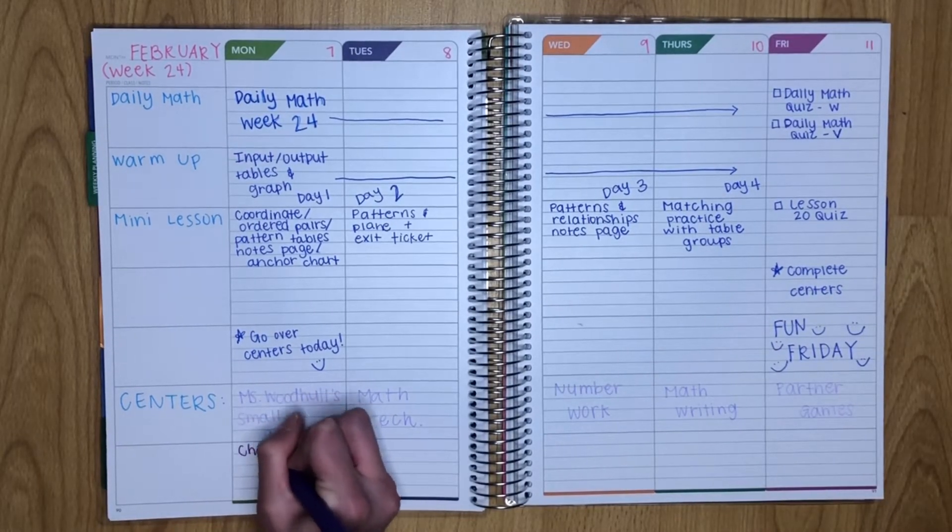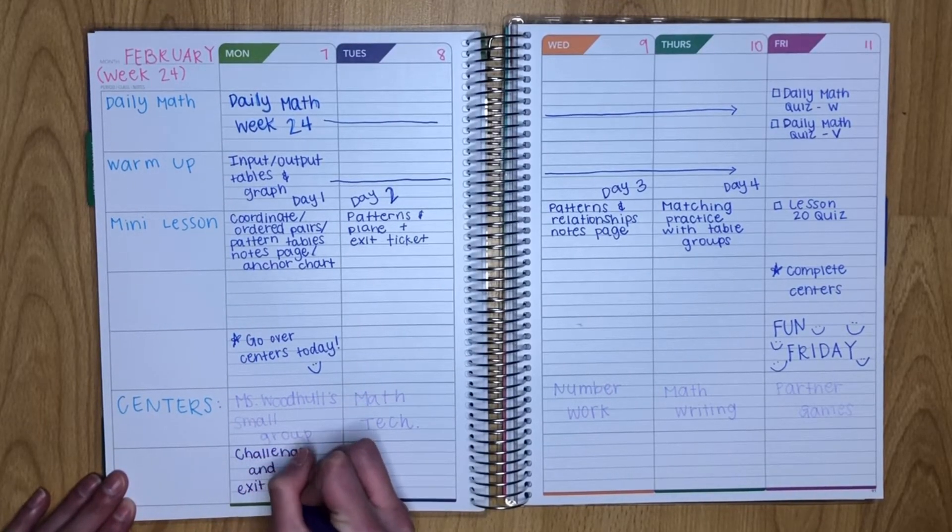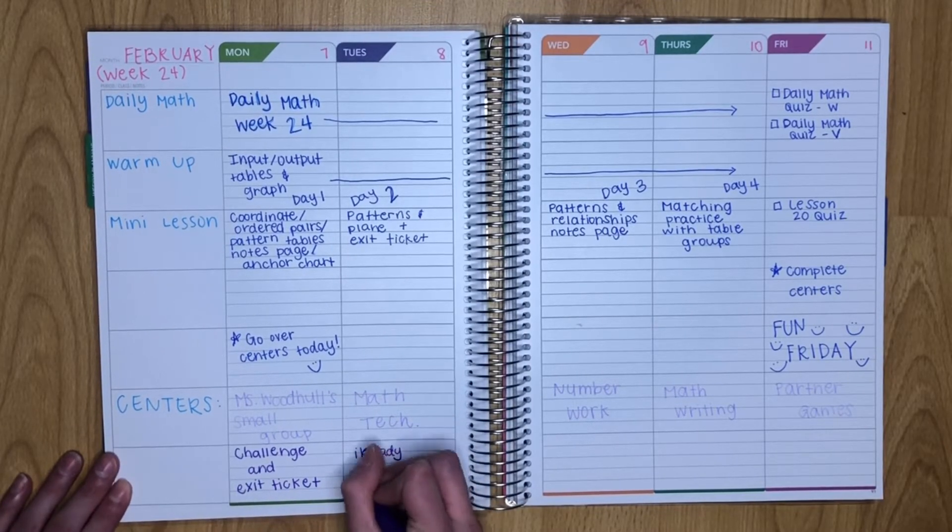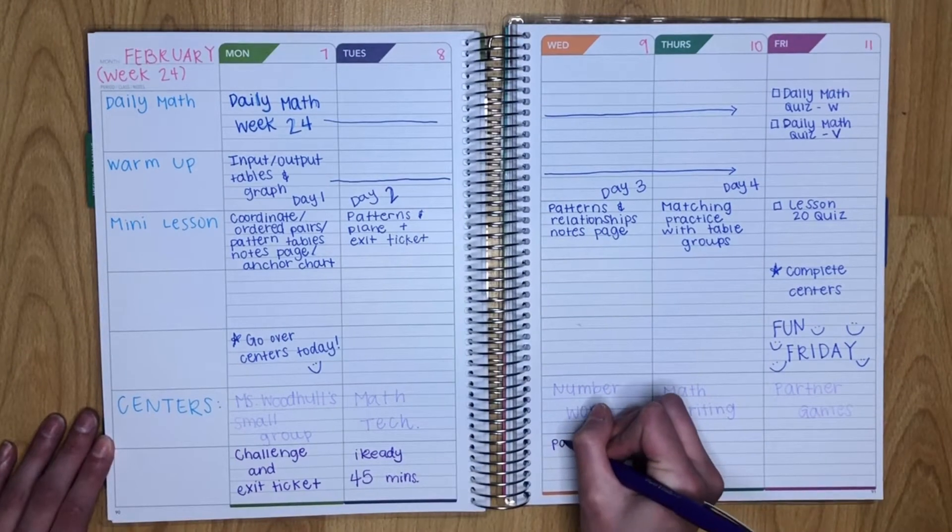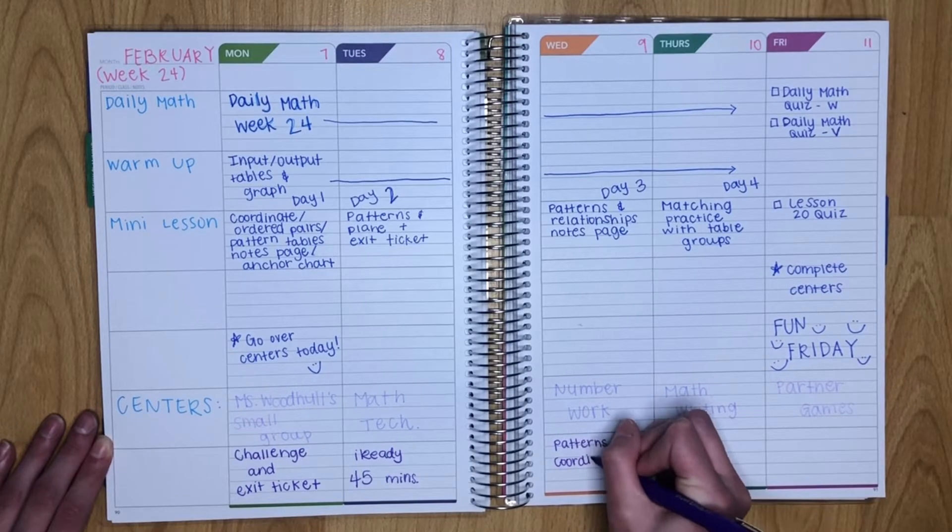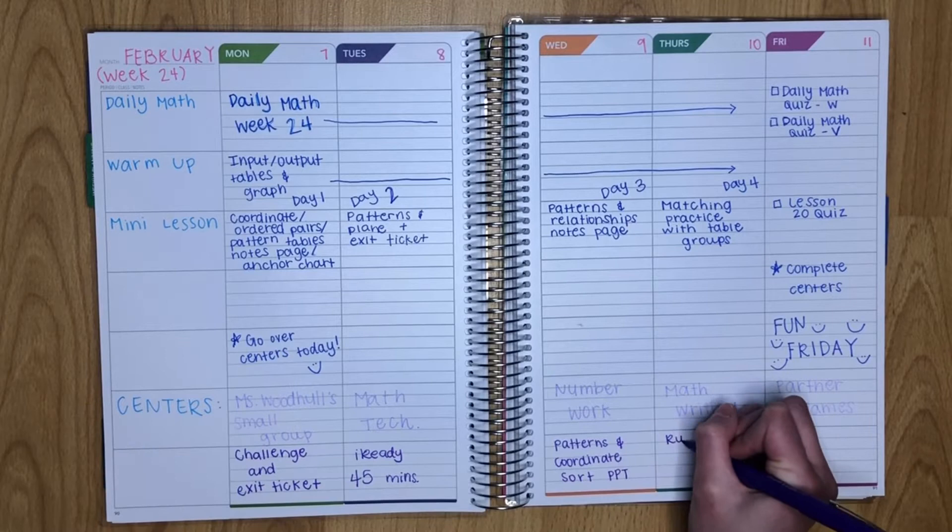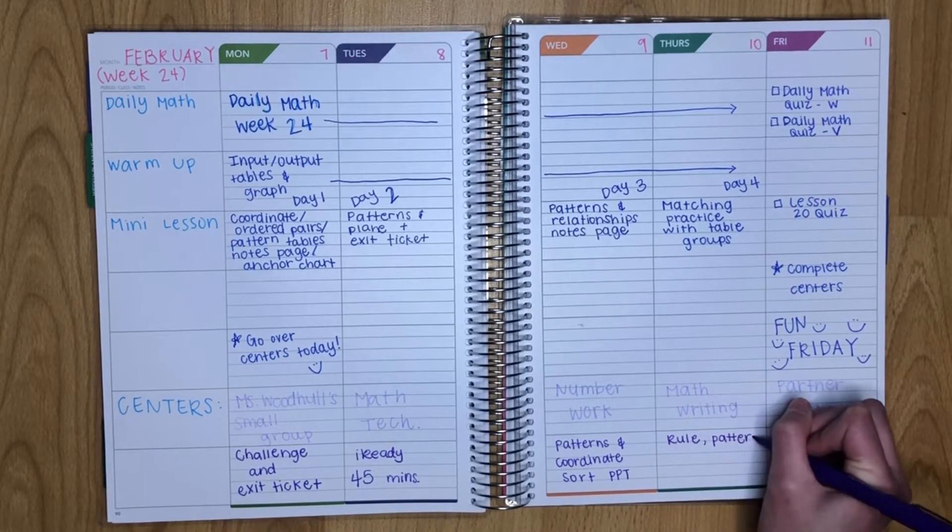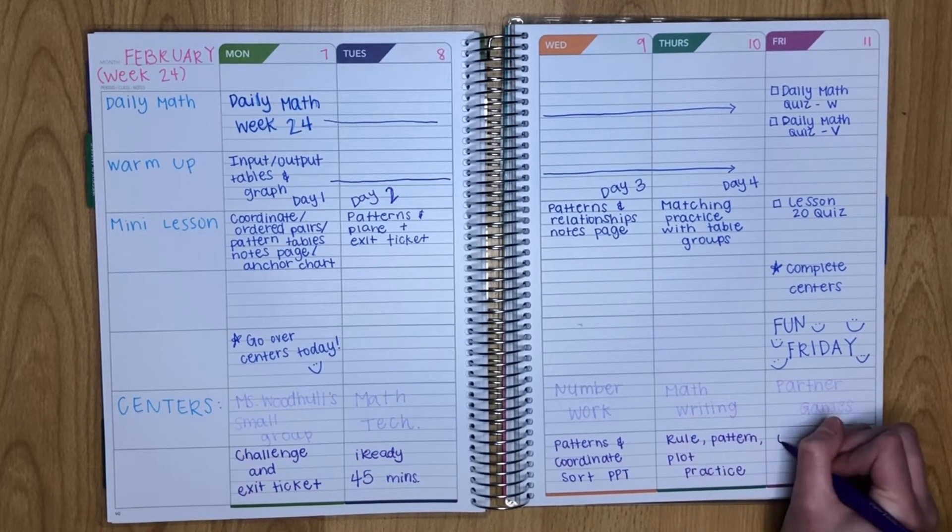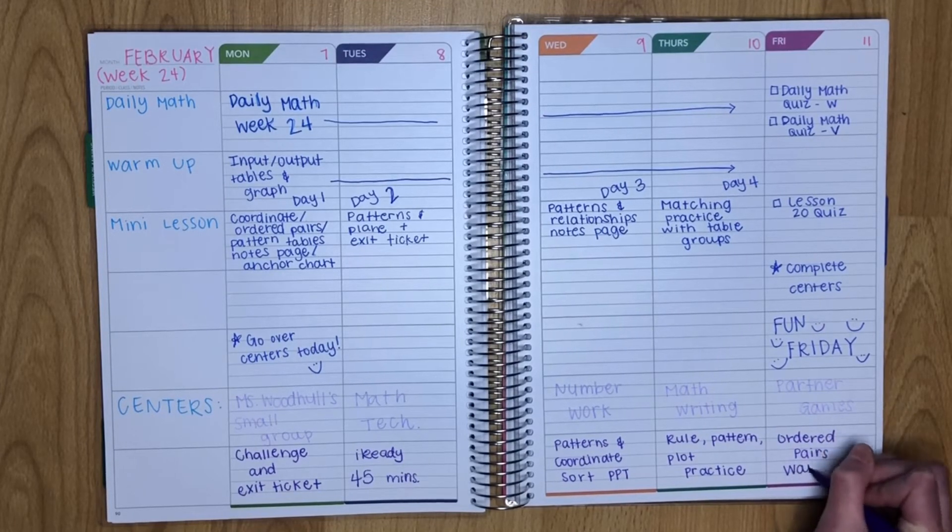Speaking of centers, for my small group this week, I planned out a challenge, an exit ticket to work with the students on. Math technology is the same for every week. They have to get 45 minutes on iReady. My number work center, I have a patterns and ordered pairs number sort on PowerPoint that they can complete. And math writing is a rule, pattern, and plot practice packet. That's a tongue twister. Partner games for the week is an ordered pairs warship, which is basically like Battleship with ordered pairs.